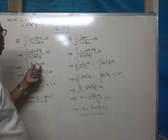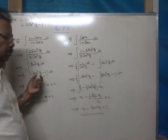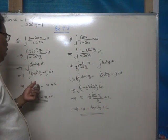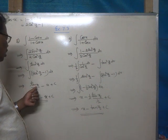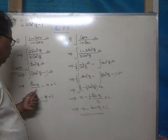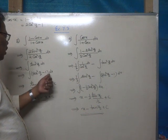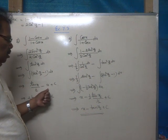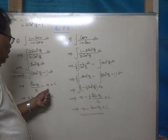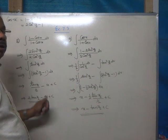tan²(x/2) can be written as sec²(x/2) - 1. So the integral of sec²(x/2) is tan(x/2) divided by half, which gives 2tan(x/2). The integral of 1 dx is x. Therefore, the answer is 2tan(x/2) - x + C.